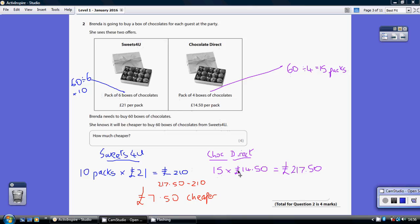So how much cheaper is Sweets for You? Well, £217.50 take away £210 is £7.50 cheaper.